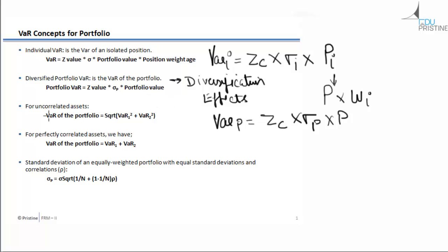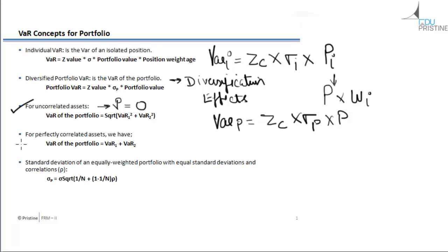Now let us talk about the VaR of the portfolio when the assets are uncorrelated. When assets are uncorrelated, the correlation coefficient between those two assets is zero. In that case, the VaR of the portfolio is given by the square root of (VaR of asset one squared plus VaR of asset two squared). We will discuss this formula in a bit more detail in the coming slides.